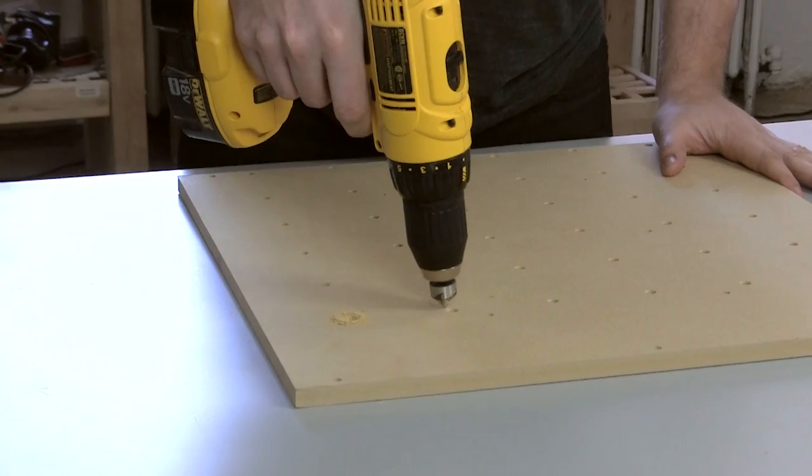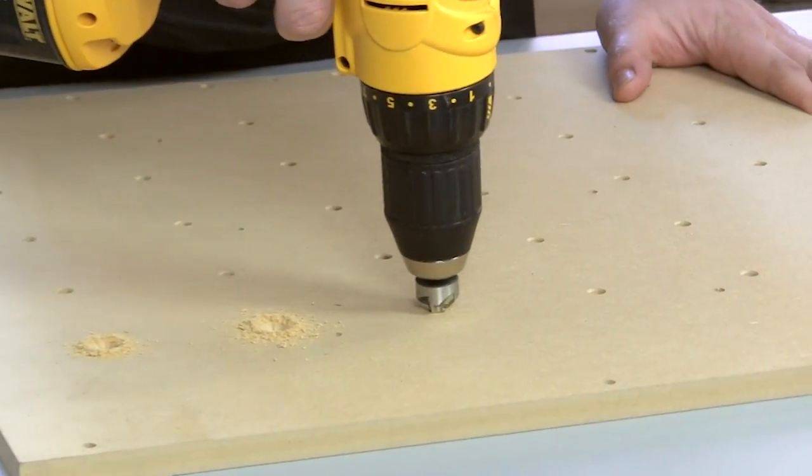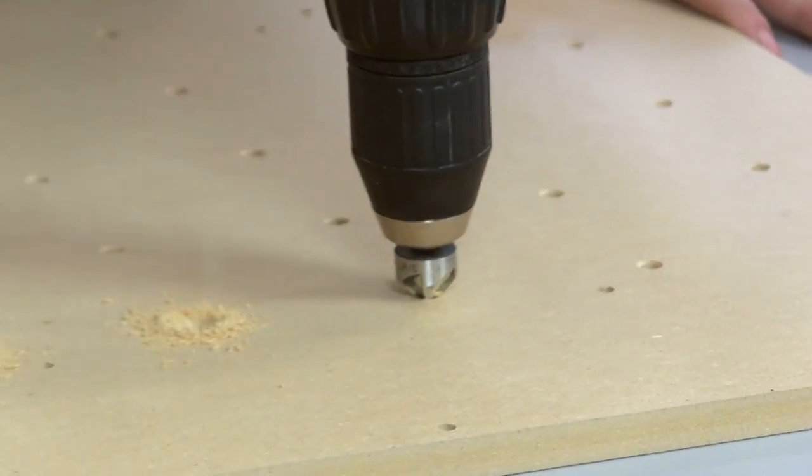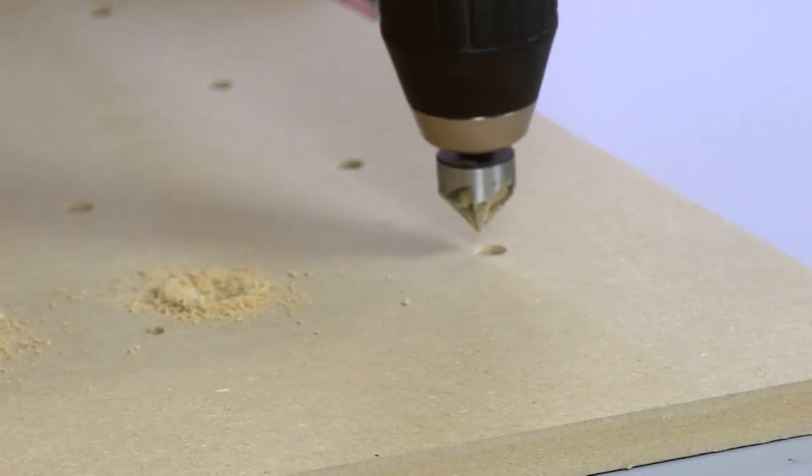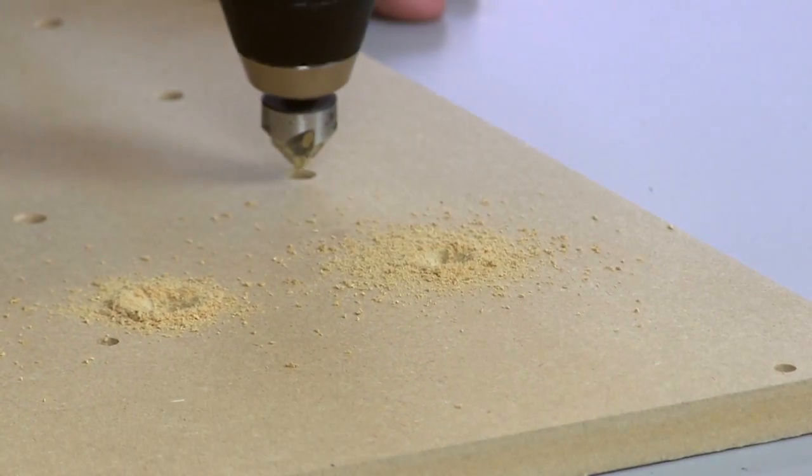Apply light pressure to each hole and just try to make the countersink about as big as the threaded insert. Make sure that the drill is vertical the whole time.